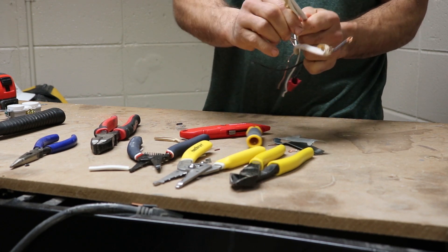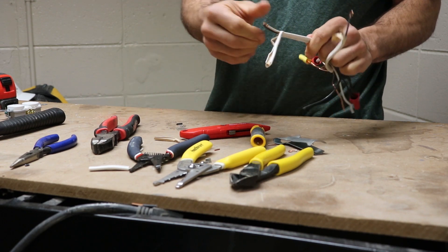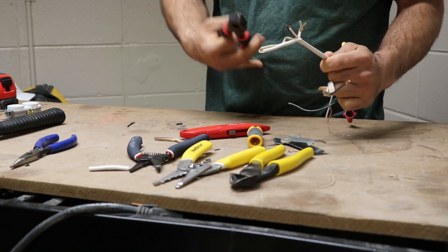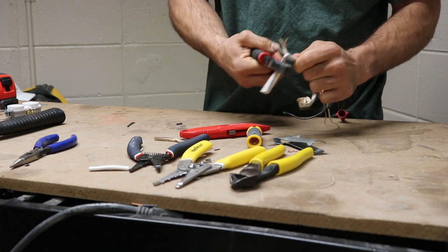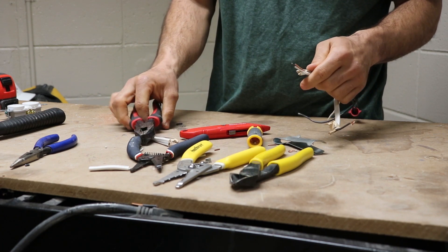As you can see, it just cuts the sheathing and then you can cut the sheathing away using your lineman's pliers or your strippers, whatever.